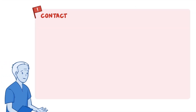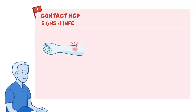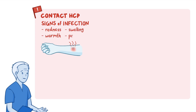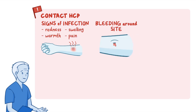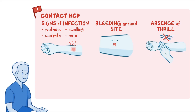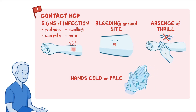Teach them how to clean the access site and change the dressing to prevent infection and to watch it closely for any changes. Instruct them to contact their healthcare provider immediately if there are signs of infection like redness, warmth, swelling, or pain; if they notice bleeding around their access site; an absence of a thrill; or if their hands become cold or pale.